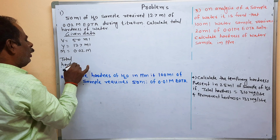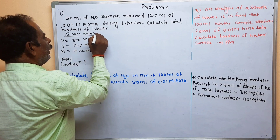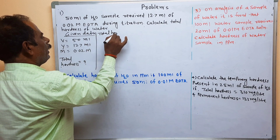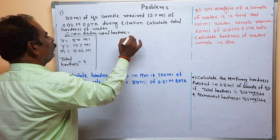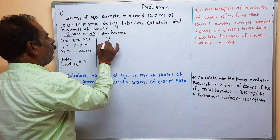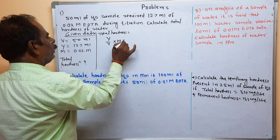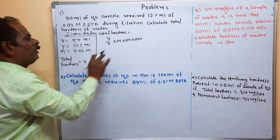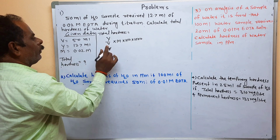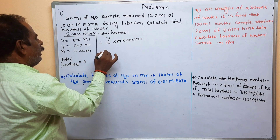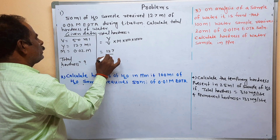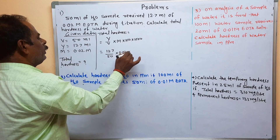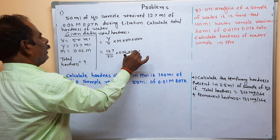You know the formula of total hardness. Total hardness of water sample is equal to Y upon V into M into 100 into 1000. Substitute the given values: 12.7 upon 50 into M, which is molarity of EDTA 0.2, into 100 into 1000.